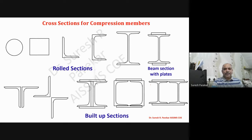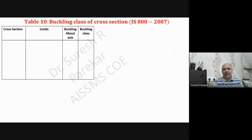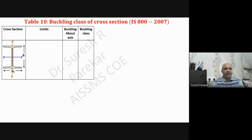This completes the second part of the sheet. For the third part we have Table 10 — the buckling class of cross sections from IS 800:2007. We have the I-section shown here. An important note: the horizontal axis is not called the XX axis in IS code; it is called the ZZ axis. So we have ZZ axis and YY axis.